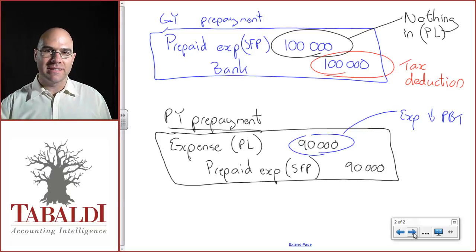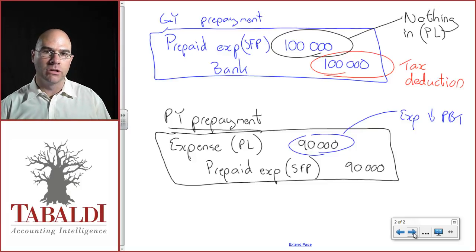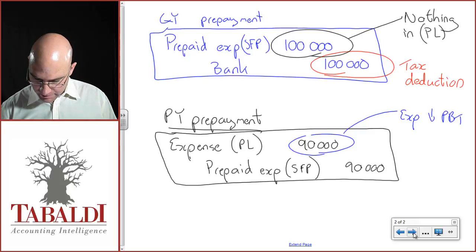Will the tax authority give you a second deduction? Remember, he gave you that ninety thousand deduction last year when you made the payment. At this point, the tax authority will not give you another deduction.